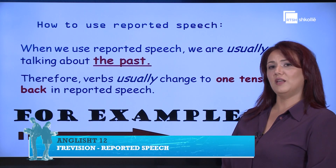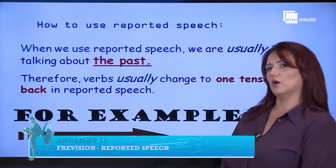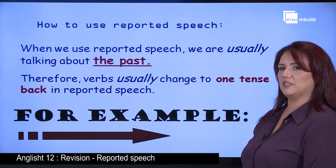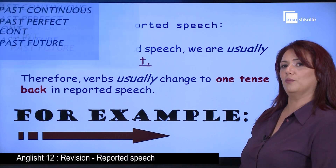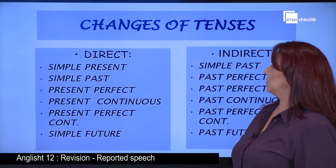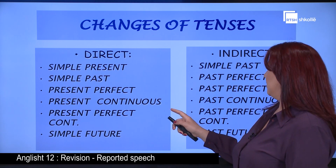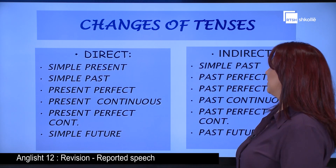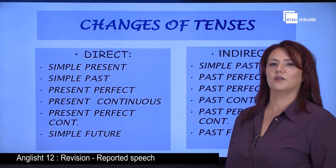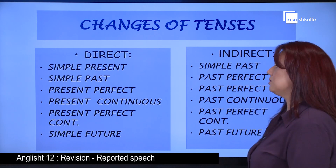Remember that when we use reported speech, we're usually talking about the past. Therefore, verbs usually change to one tense back in the reported speech. For example, the simple present moves to simple past, the past simple moves to past perfect, the present perfect moves also to past perfect, present continuous becomes past continuous, present perfect continuous becomes past perfect continuous, and the simple future becomes past future.